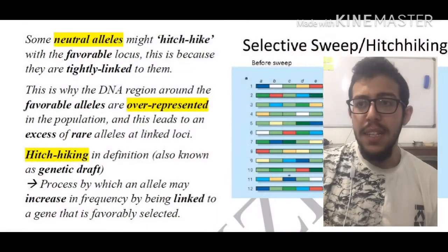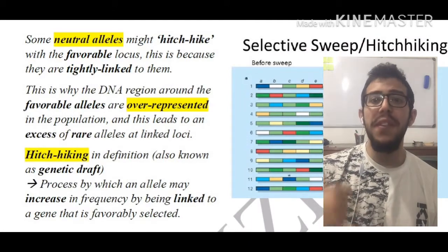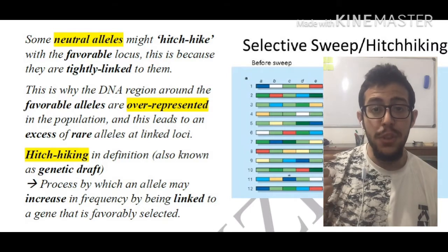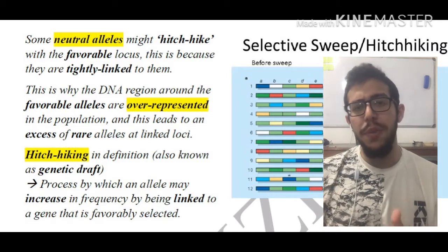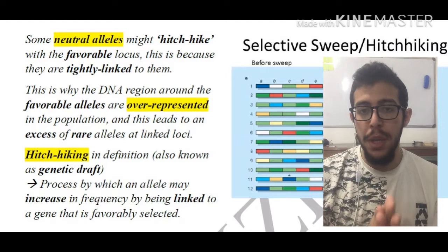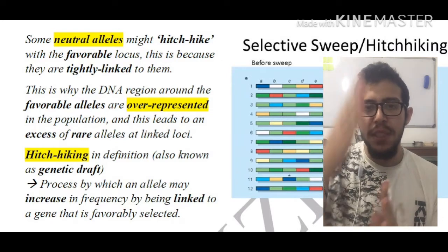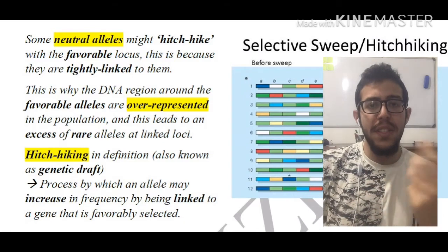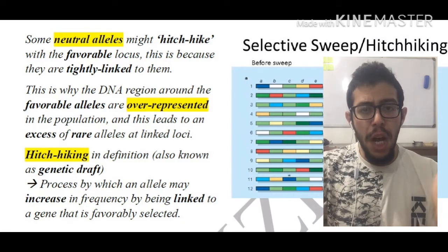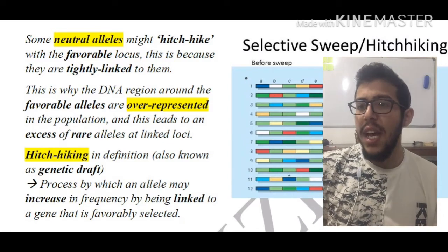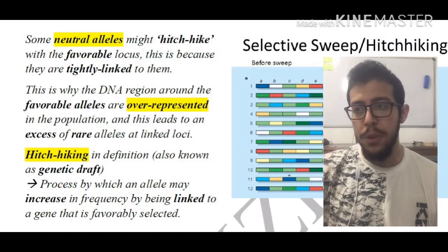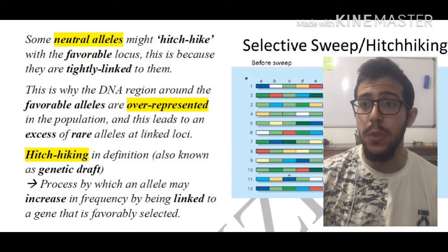Some neutral alleles might hitchhike with the favorable locus because they are tightly linked to them. That is why, if you refer back to the previous image, we saw the red allele that is present in abundance in most organisms, and the alleles to its left and right are rather common because of this issue. This is also present in the image on screen at the moment.